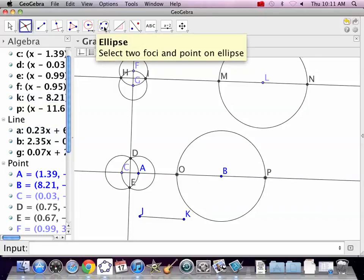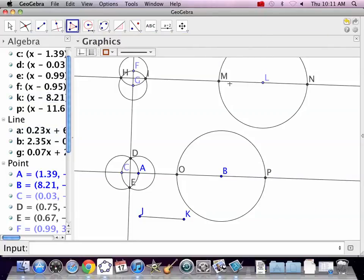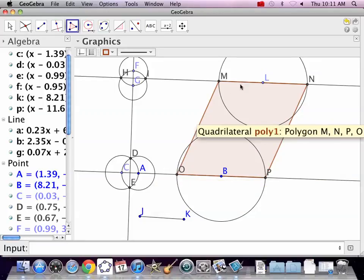There is the parallelogram. It goes from M to N to P to O to M. I made one side parallel, and I also made that side congruent.